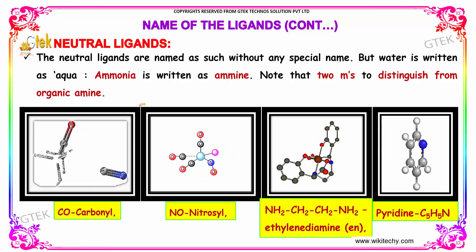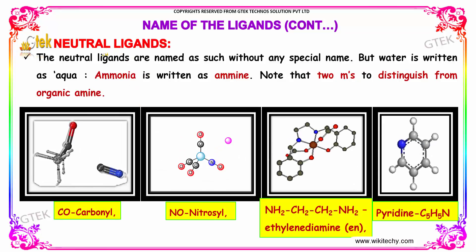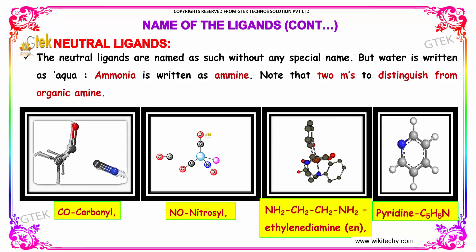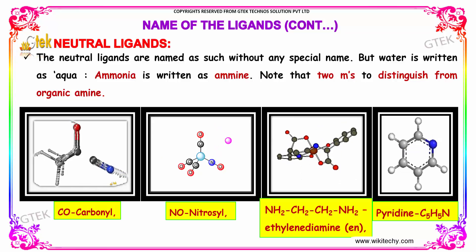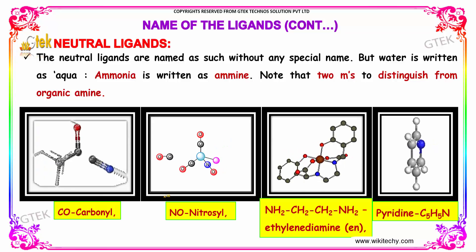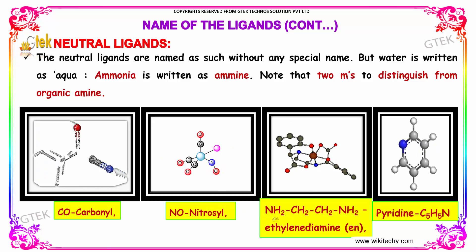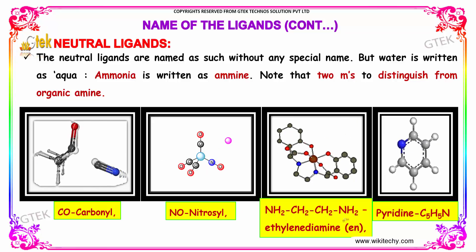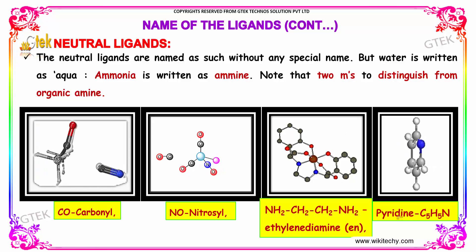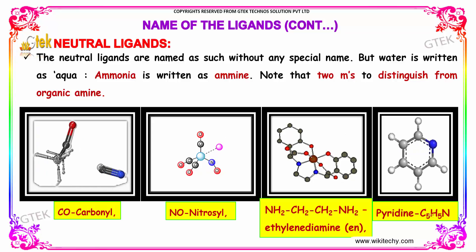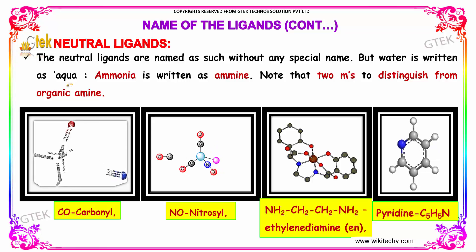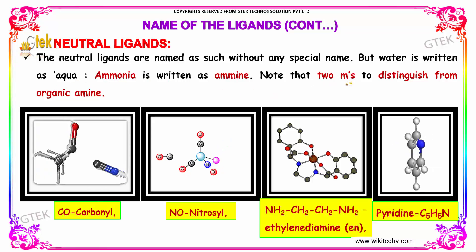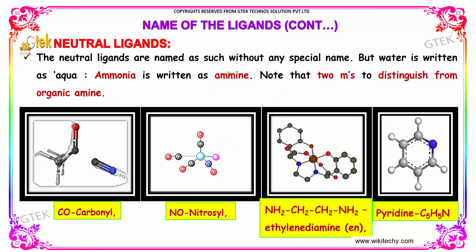The other type is neutral ligands. Neutral ligands are named with their common names without any special suffix. Examples include carbonyl, nitrosyl, ethylene, diamine (en), and pyridine. However, water is written as 'aqua' and ammonia is written as 'amine' — note the two M's — which distinguishes it from organic amines.